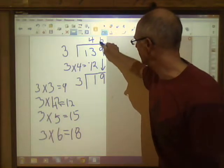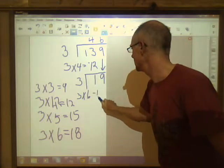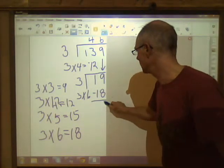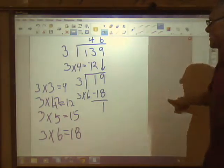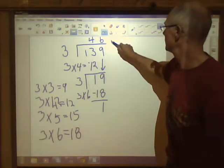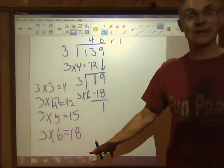3 x 6 = 18. We have one left over. And there's your answer. The answer is 46 remainder 1. That's it. It's that simple.